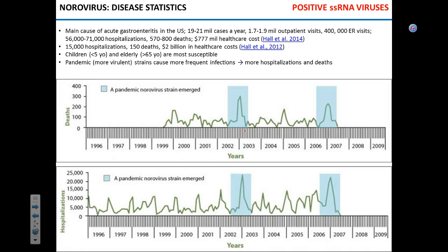How bad is norovirus in the United States? It's the main cause of gastroenteritis: 20 million cases a year, two million outpatient visits, 400,000 ER visits, about 60,000 hospitalizations — usually elderly and children due to dehydration — and hundreds of deaths. A 2012 estimate put the cost at two billion dollars, not even accounting for lost wages. During pandemic years, there were two to three hundred deaths.